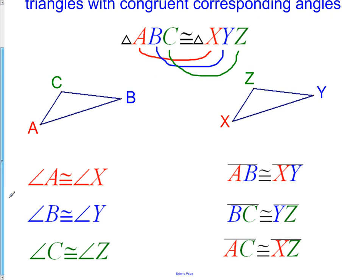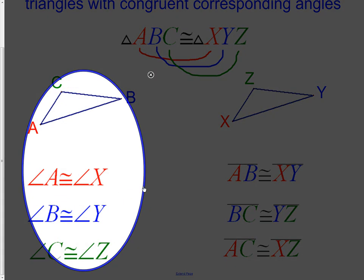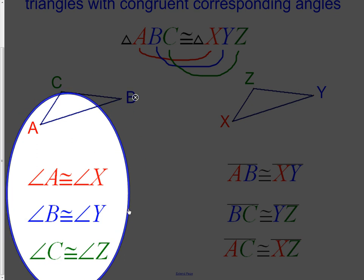That is the first part of our congruency statement as we see here on the left of the screen. We have triangle A congruent to X, B congruent to Y, and C congruent to Z.